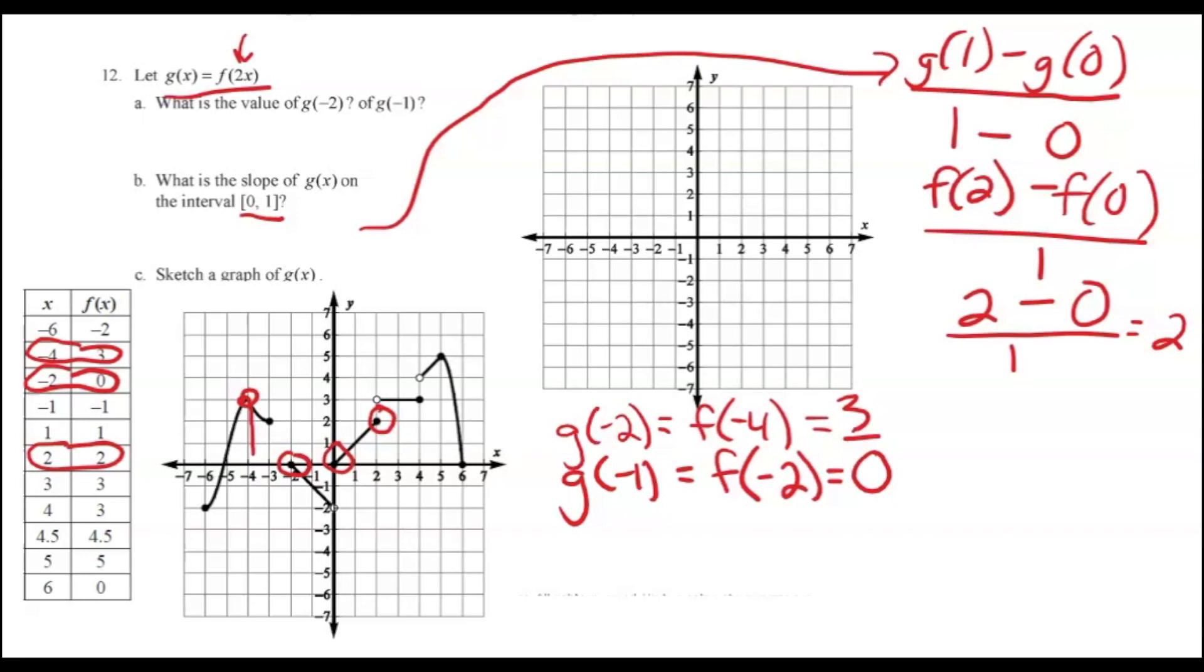Then what we need to do is sketch the graph of G of X. This is where this transformation comes in, where this represents a horizontal compression. It squishes it horizontally, is what I tell the kids, and it basically makes it half as big. It's compressing it by a factor of 2.